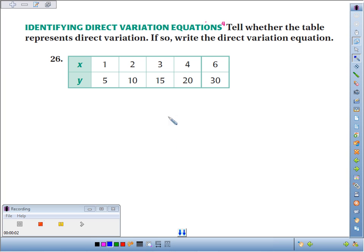Number 26. We're going to tell whether the table represents direct variation, and if it is, write the equation for it. To be direct variation, we have to have y equals some number times x.